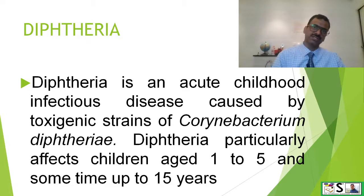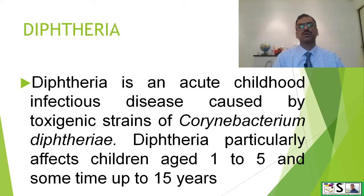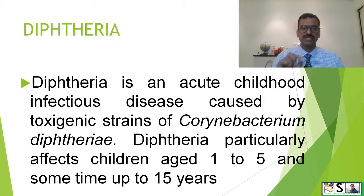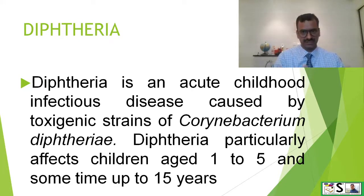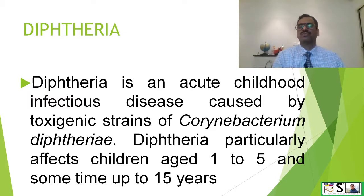What is diphtheria? Diphtheria is an acute childhood infectious disease which is caused by toxinogenic strain of Corynebacterium diphtheriae. Diphtheria particularly affects children mainly aged 1 to 5 years, but sometimes it may also affect children up to 15 years.